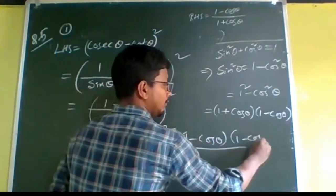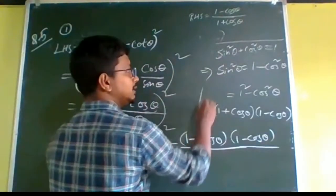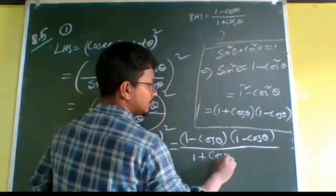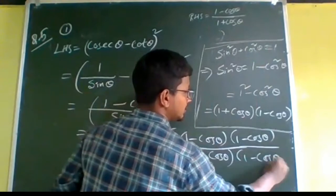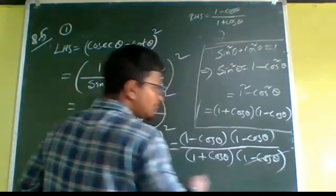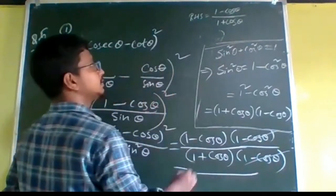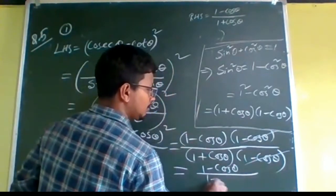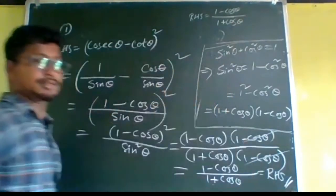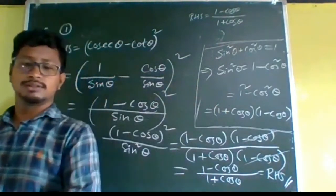The numerator is (1 - cosθ)² and the denominator sin²θ can be written as (1 + cosθ)(1 - cosθ). Now we can cancel — (1 - cosθ) from the numerator cancels with (1 - cosθ) from the denominator. Finally we get (1 - cosθ) / (1 + cosθ), which is our right-hand side. This is the result. This is the technique we are supposed to use.